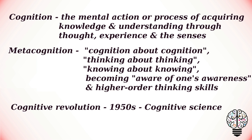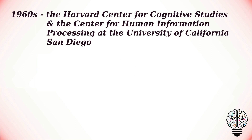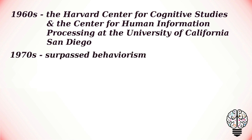The cognitive revolution was later known as cognitive science. Some of the relevant areas of this revolution are psychology, linguistics, computer science, anthropology, neuroscience, and philosophy. In the 1960s, the Harvard Center for Cognitive Studies and the Center for Human Information Processing at the University of California, San Diego were set up.